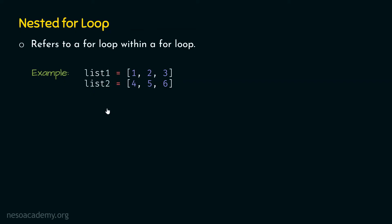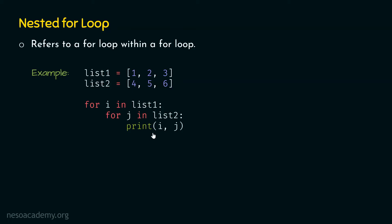We need the outer for statement first: `for i in list1`. This allows us to access each item of List1, and variable i receives those values one at a time. Within this for loop, we need another for statement: `for j in list2`. This accesses each item of List2, providing values to variable j one at a time. Inside this inner loop, we write a print statement — `print(i, j)` — where the comma gives a whitespace between i and j. After the inner for loop completes, we print a new line.